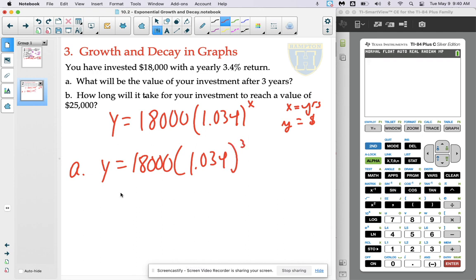We multiply the initial amount by that factor increase three times, and we get that our amount of money in the account at the end of that three years is $19,899.13.